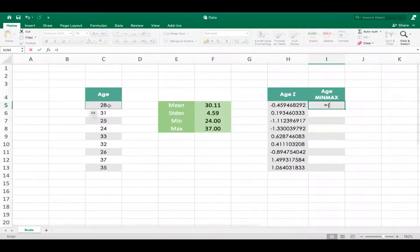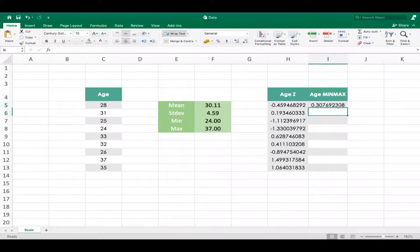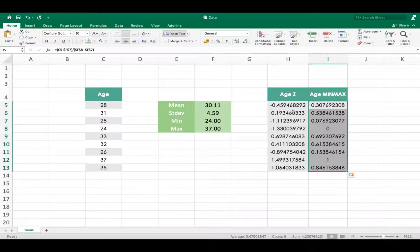You must have got an idea that we have to take the value minus the minimum value divided by the range, which is the maximum value minus the minimum value. So this is your min-max scaled value. Again, you can drag it. Now this value, the first column will always range between negative three to positive three, because that's how your normal distribution is typically. And this value, this column will always vary between zero and one.